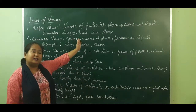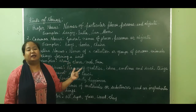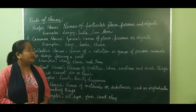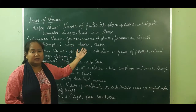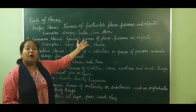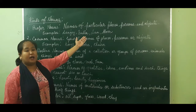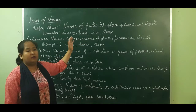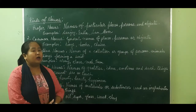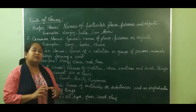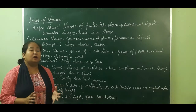India is the name of a place — there is only one India in this whole universe. Similarly, the sun and the moon — there is only one sun and only one moon, one of its kind. So Sanjay, India, sun, moon — they are unique, one of their kind. These are called proper nouns — names of particular persons, places, or objects.